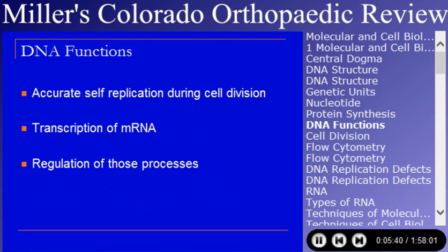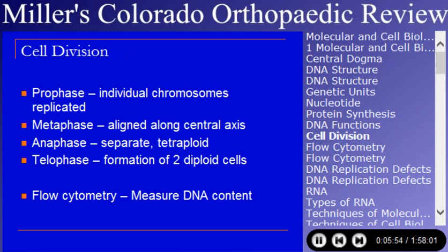DNA functions to accurately self-replicate during cell division, to transcribe messenger RNA, and to regulate both of those processes. Cell division is looked at in a couple of ways. The classic way — prophase, metaphase, anaphase, and telophase — takes a single cell and makes it into two cells. The DNA content of this process can be measured with flow cytometry, which is a subject popular on the test.